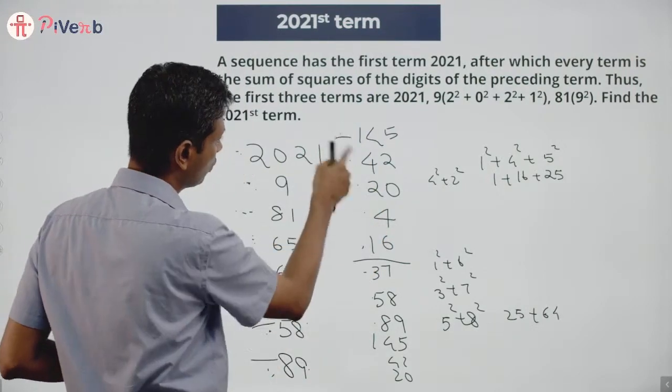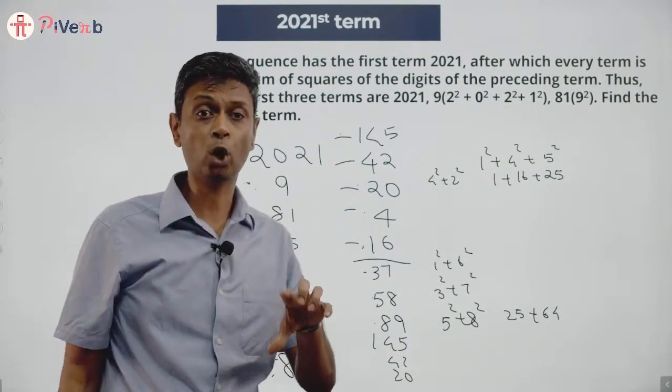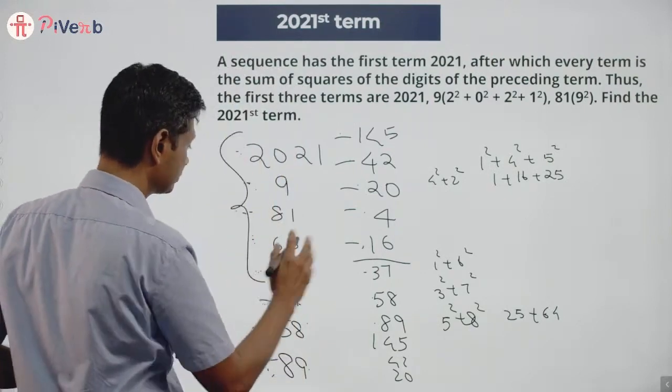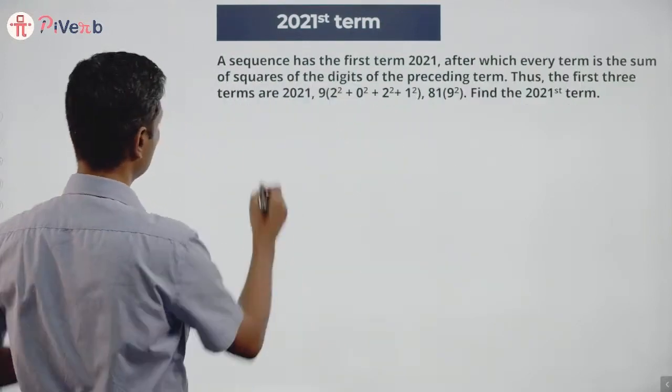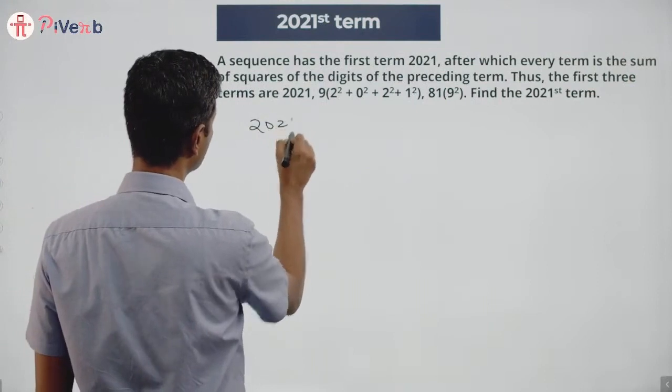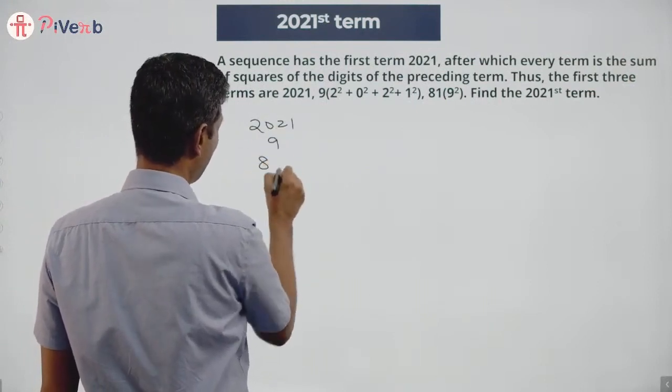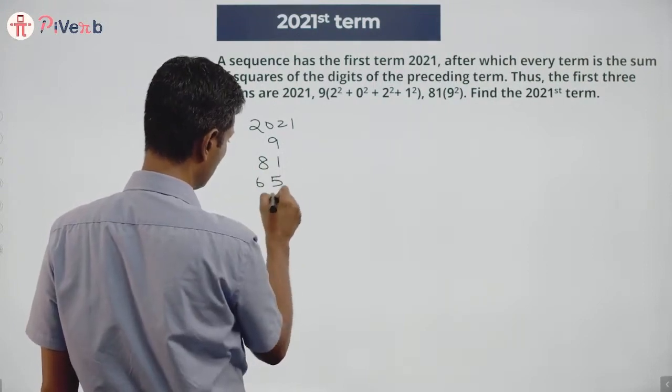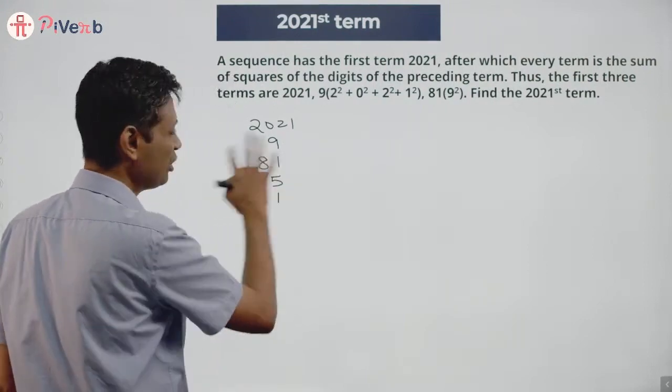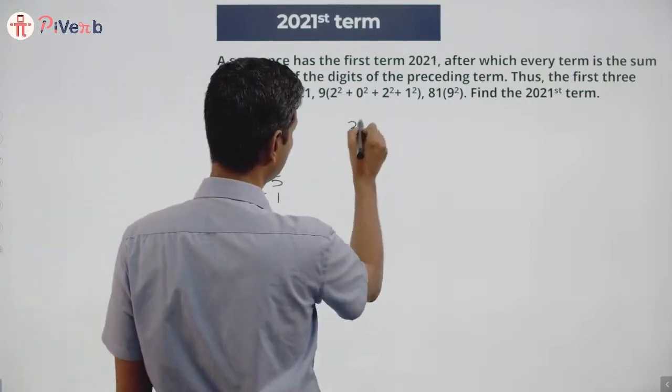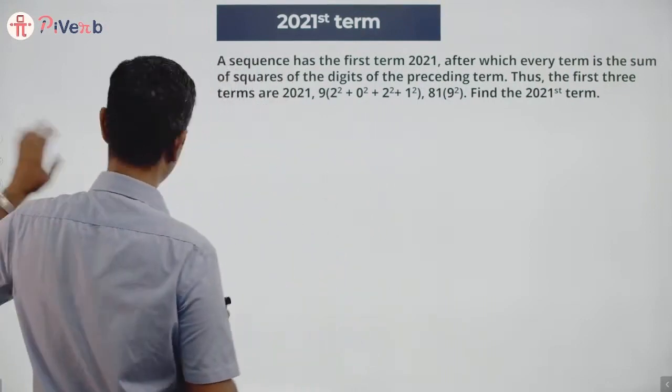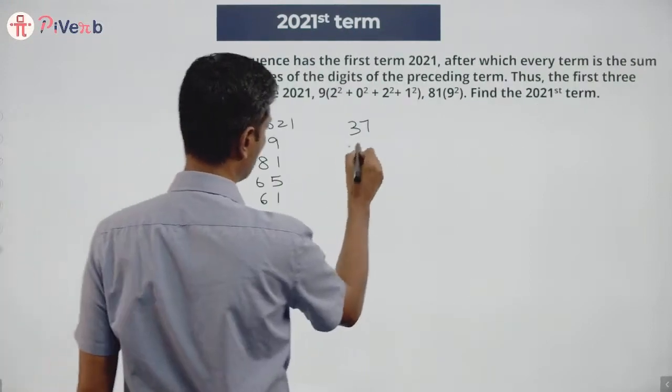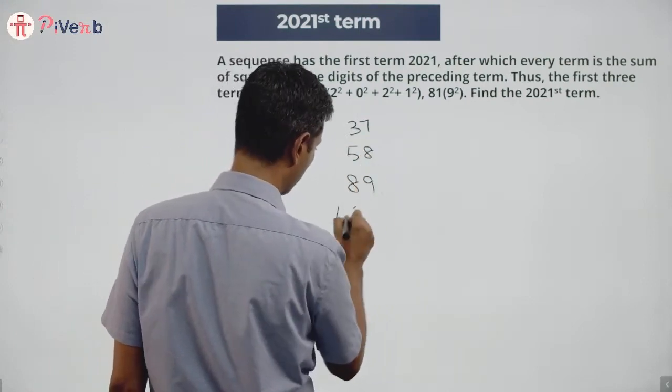I have eight numbers repeating. I'm going to rewrite this whole sequence, take care of these six pesky numbers outside. I'm going to say 2021, 9, 81, 65, 61—keep these five numbers aside. After 61 I get 37, after 37 I have 58, 89, 145...